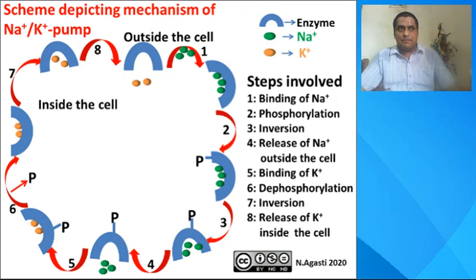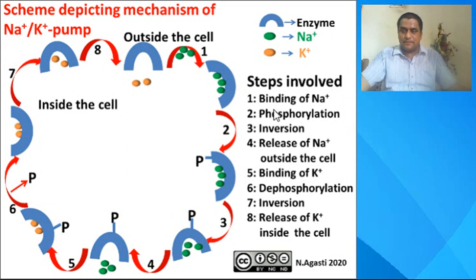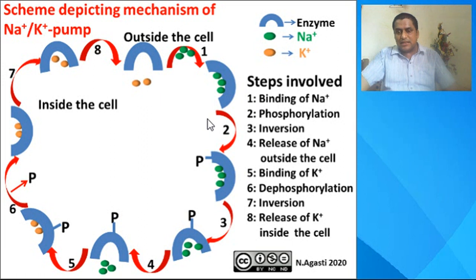Let us look at a scheme that depicts the mechanism of the sodium potassium pump's working. This is the membrane; this region is inside the cell and this region is outside the cell. In the first step, sodium ions bind to this enzyme, and that prompts the phosphorylation process. In this step, ATP gets converted to ADP and inorganic phosphate, and as a result this enzyme gets phosphorylated — the phosphate ion is attached to the enzyme. This phosphorylation induces a conformational change in the enzyme.